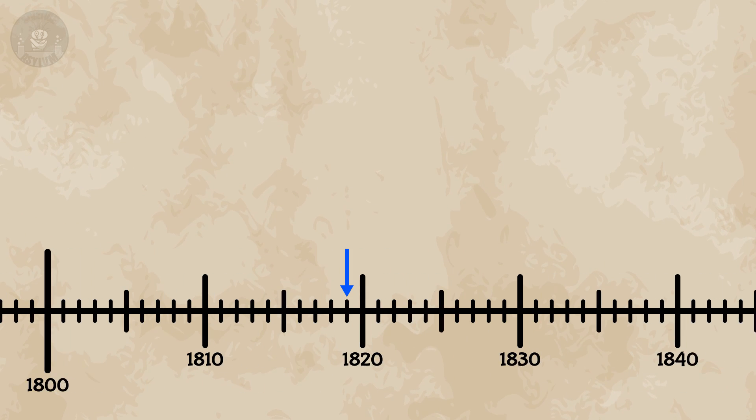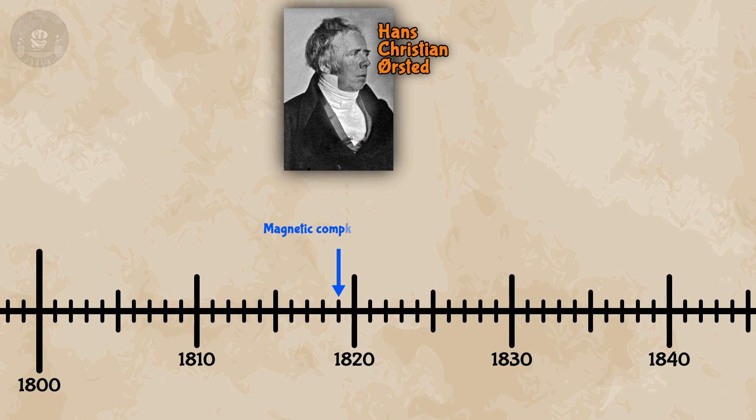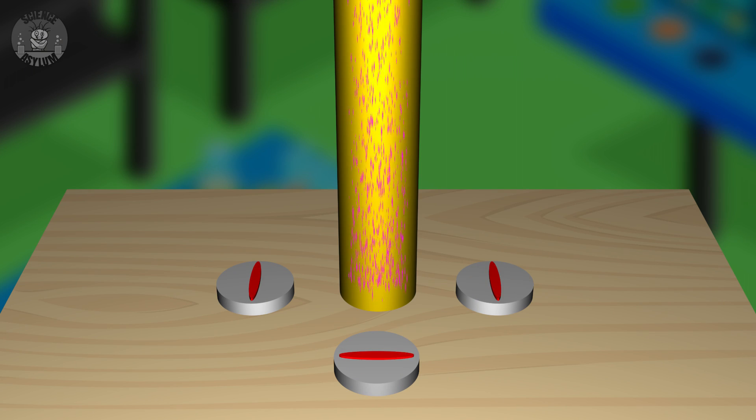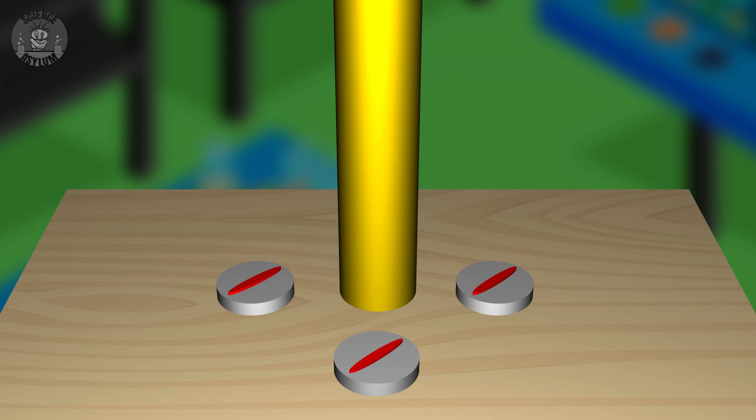In 1819, Hans Christian Ørsted noticed that magnetic compasses deflected near a current carrying wire. Kind of like this, on, off, on, off, on, off.